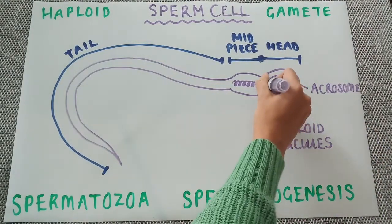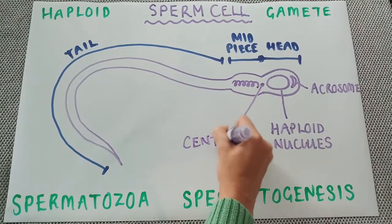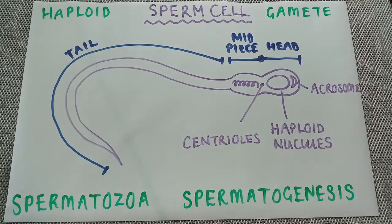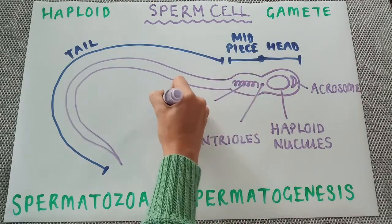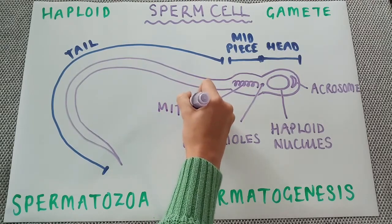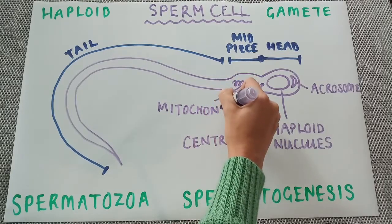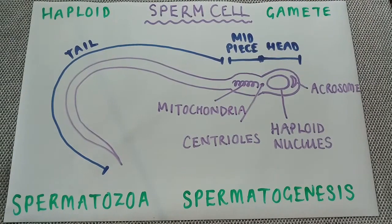At the end of the head we have centrioles, which are there to help the zygote, once it's formed, divide and keep dividing. In the mid piece we have a helical shape, which are mitochondria. These are producing a lot of ATP energy to allow the sperm to swim.